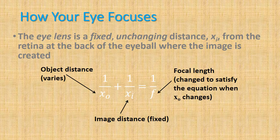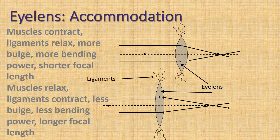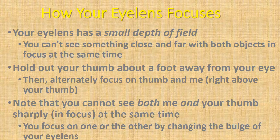The eye lens is a fixed, unchanging distance from the retina at the back of the eyeball where the image forms. The eye lens changes its focal length by changing its shape — this is called accommodation. Ligaments pull on the lens to change its shape: when muscles contract and ligaments relax, there is more bulge and more bending power, giving a shorter focal length.